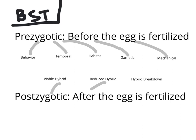Another example of a postzygotic barrier is a hybrid inviability. This means that the hybrid made between two species will not survive and therefore will not be able to reproduce. A hybrid breakdown is also postzygotic — the first generation of hybrids will be fertile and able to live, however after that generation they begin to break down: they won't be fertile or they just won't be able to live. Thank you for watching.